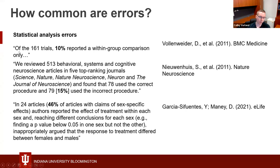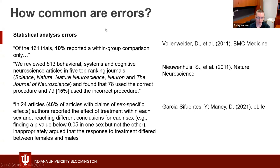This error inflates type 1 error and can lead to misleading conclusions. A few surveys have found this is not uncommon. The first looked at 161 trials and found that 10% reported within-group comparison only instead of the correct between-group comparison. The second survey looked at neuroscience articles in five top-ranking journals and found that 15% used the incorrect procedure. Alarmingly, 46% of articles with claims of sex-specific effects reported the effect of treatment within each sex instead of doing the appropriate between-group comparison.